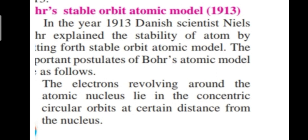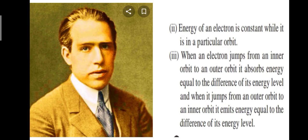In the year 1930, Danish scientist Neil Bohr explained the stability of the atom by putting forth the stable orbit atomic model. He gave the stability of electrons and the overall model. Important postulates of Bohr's atomic model: the electrons revolving around the atomic nucleus lie in concentric circular orbits at certain distances from the nucleus.